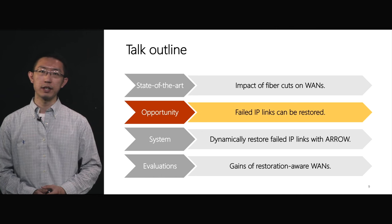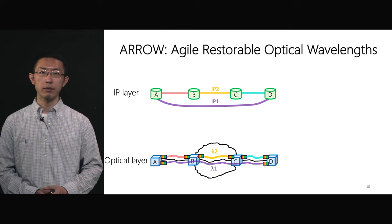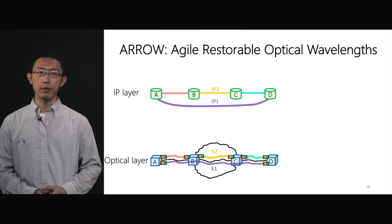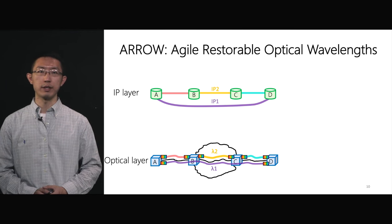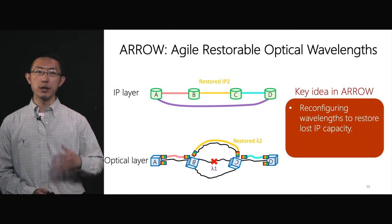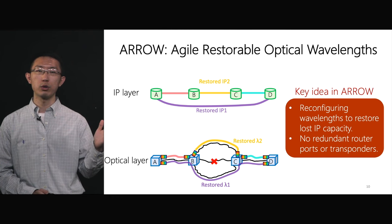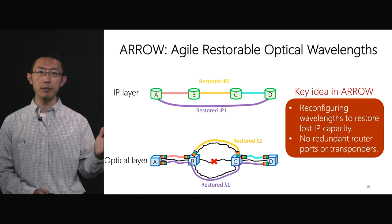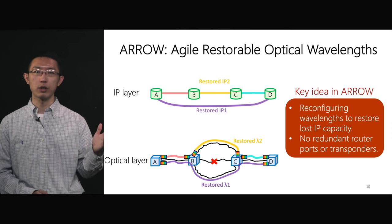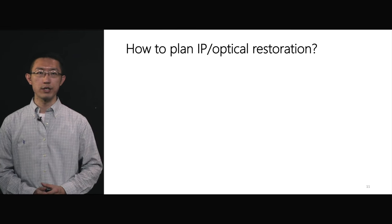Our work goes beyond the state-of-the-art by unlocking the opportunity to restore failed IP links. We propose ARROW to reduce redundancy while maintaining network availability. ARROW is the abbreviation for Agile Restorable Optical Wavelengths. Different from the state-of-the-art approach, when a fiber cut happens, ARROW achieves the same availability goal by reconfiguring the wavelengths from broken fiber to healthy fibers to restore the lost IP capacity using the same native hardware without redundant router ports and transponders. The next question is, how to plan IP optical restoration for ARROW?